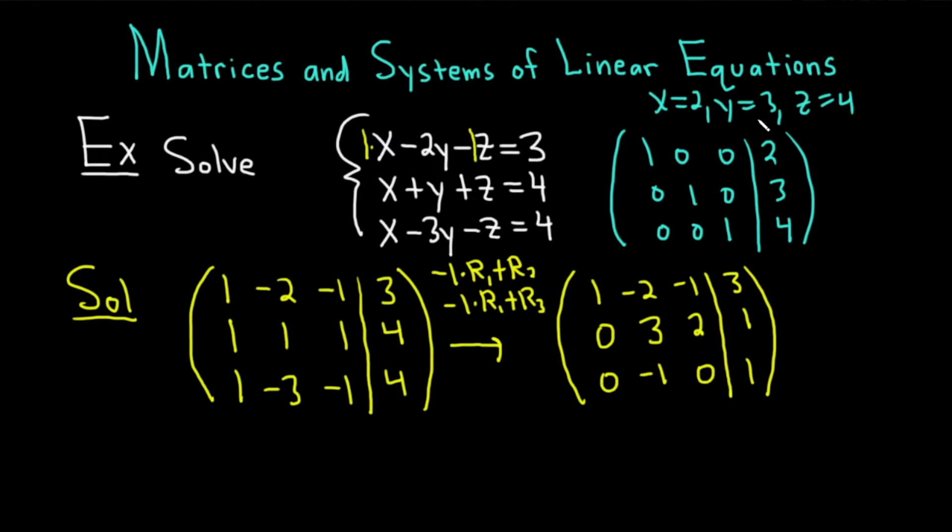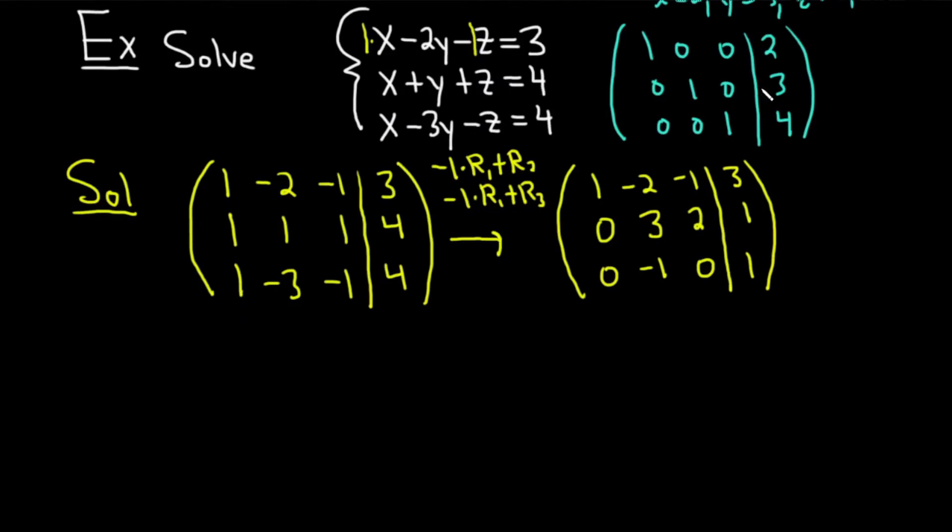The next step is to make the 3 a 1. And we have a couple ways to do that. We can switch the rows or we can divide by 3. Let's go ahead and switch the rows. So I'm going to switch row 2 and row 3. That's going to be our next operation.